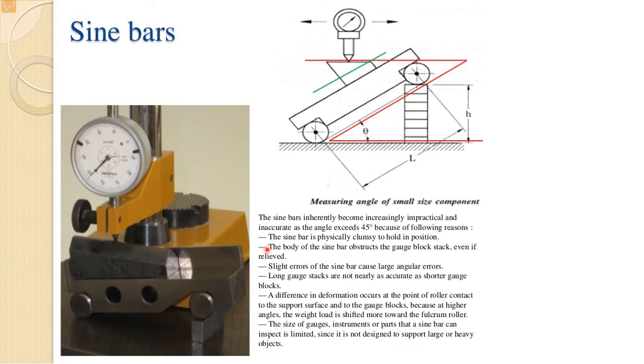Points we've written over there: the sine bar is physically clumsy to hold in position. Second, the body of the sine bar obstructs the gauge block stack even if relieved. Slight errors of the sine bar cause larger angular errors. Long gauge stacks are not nearly as accurate as shorter gauge blocks. A difference in deformation occurs at different points of roller contact because at higher angles the weight load is shifted more towards the fulcrum roller. And last, the size of gauge instruments or parts that a sine bar can inspect is limited since it is not designed to support large or heavy objects.